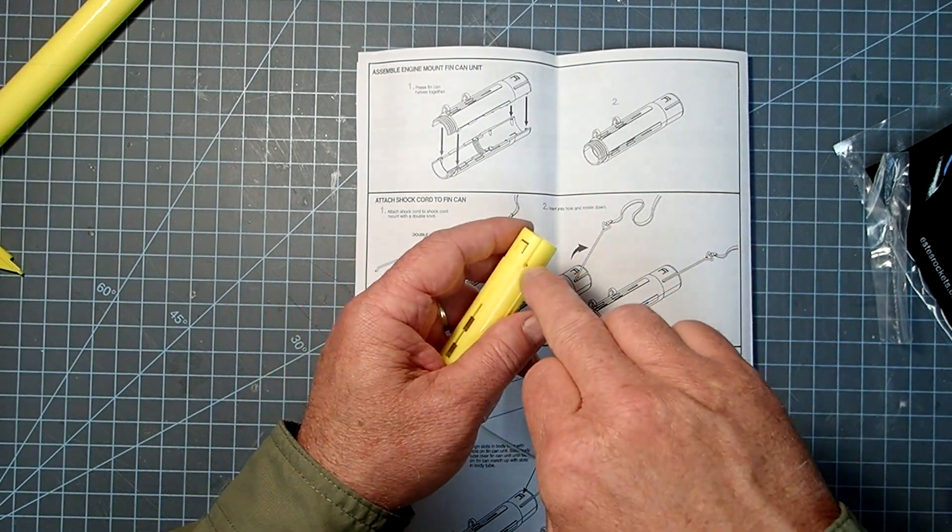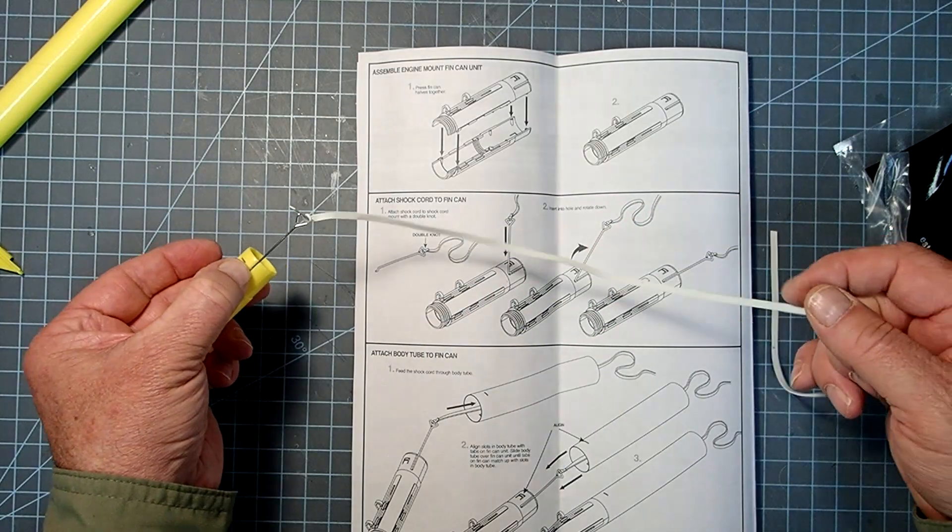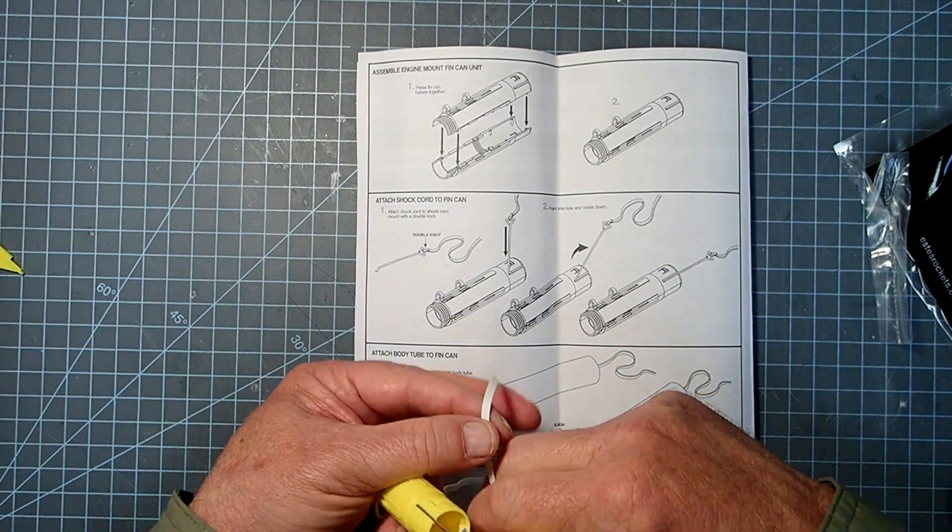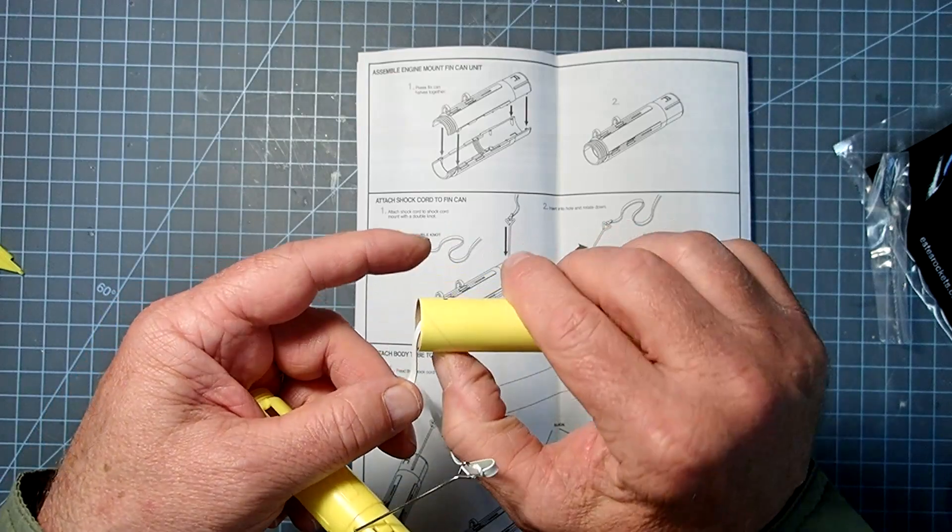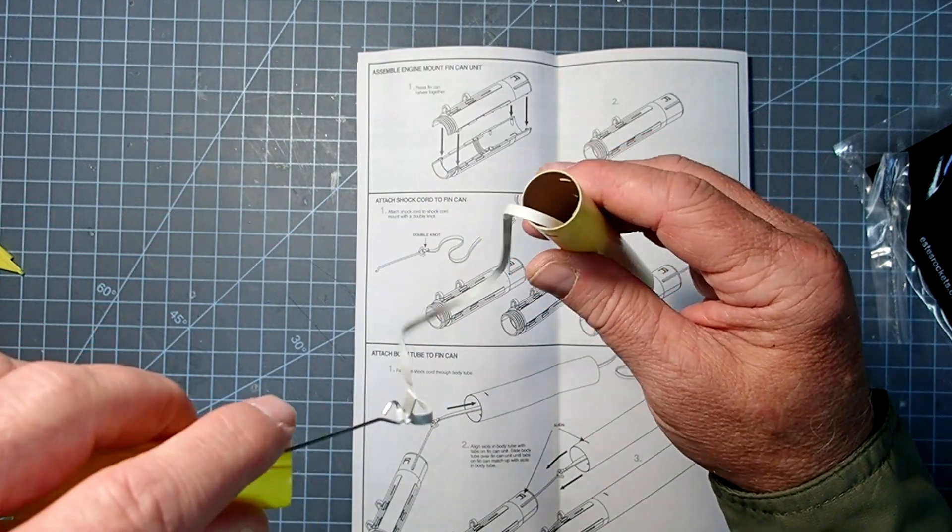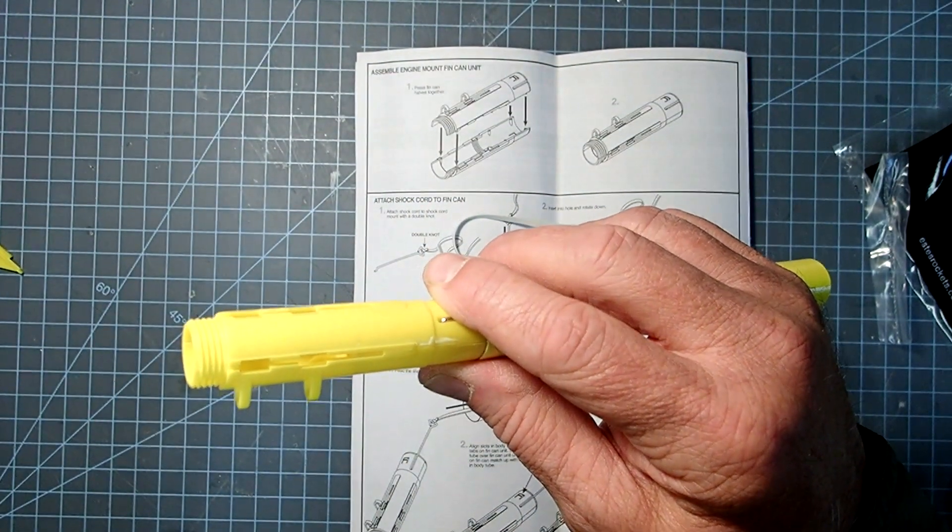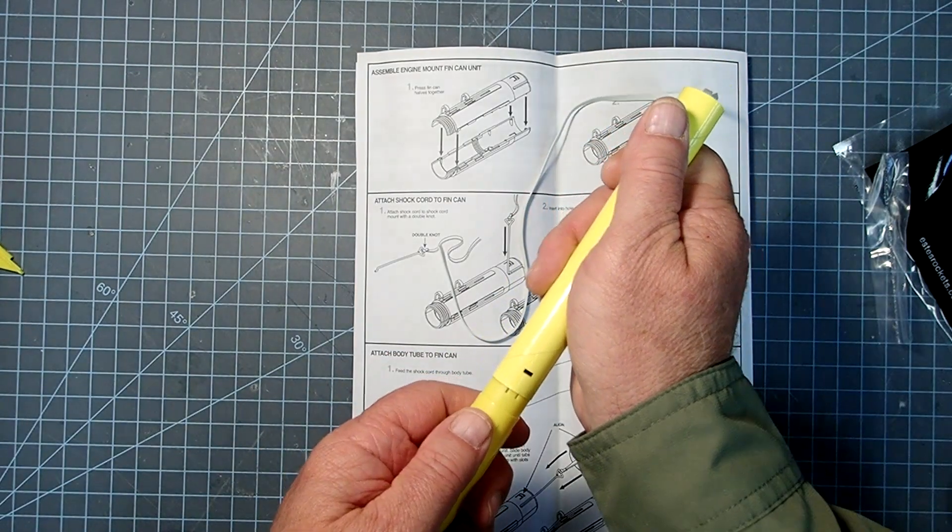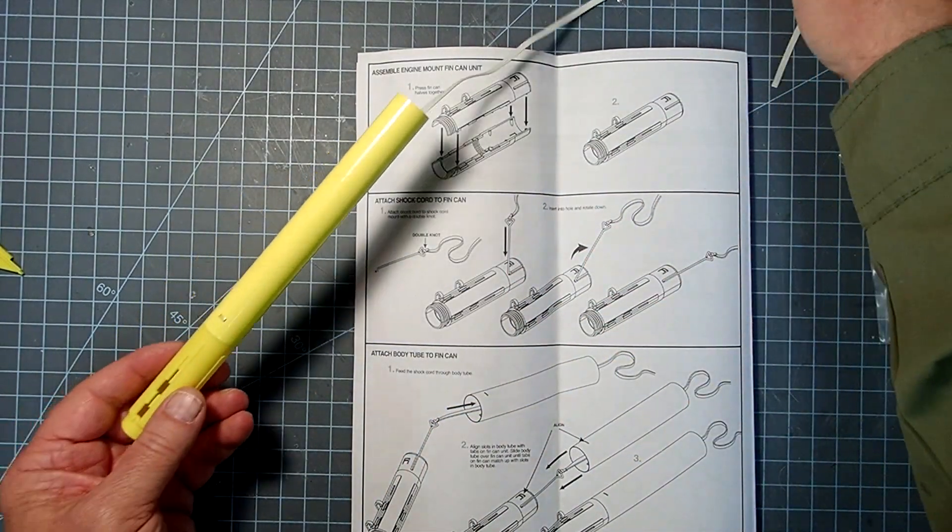And then we'll come back to our fin can here. There's on the outside a groove with a hole in it, and that we're going to put this in and that just pops down in that groove. And then we'll take our shock cord here, pass it through the body tube. And the end with these two little holes in it is going to go onto the fin can. So we're just going to pass that through there. And then we're going to line this up with these two tabs and just push that down until those pop into the holes there. We've got our shock cord coming out the top.